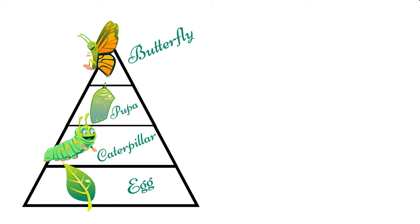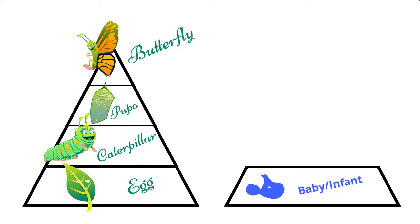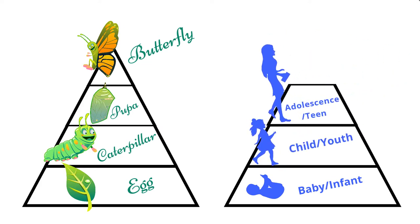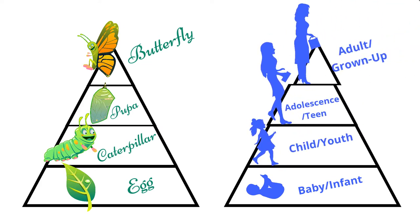With the life cycle of a butterfly in mind, comparing the butterfly's life cycle to that of humans, we can conclude that humans also go through four basic stages as well. We call them baby/infant, child/youth, adolescent/teen, and adult/grown-up.